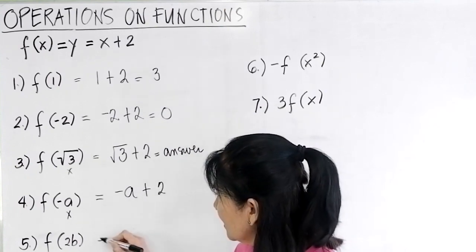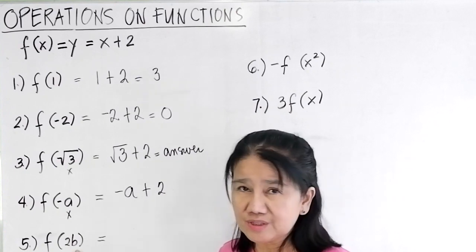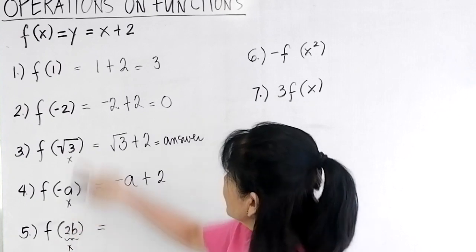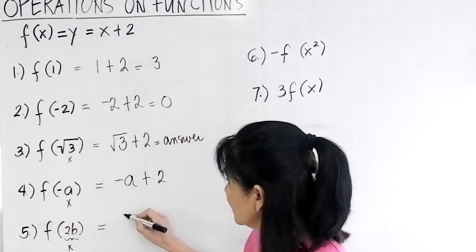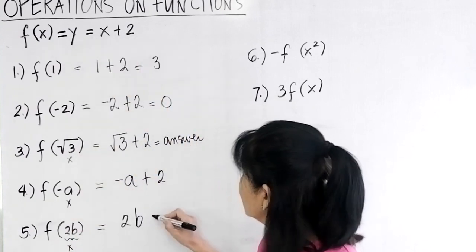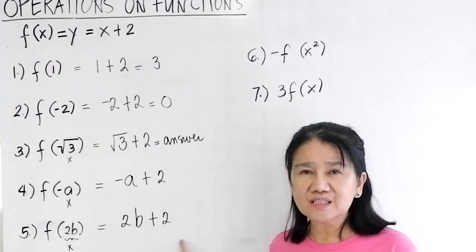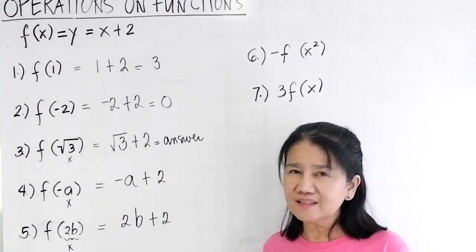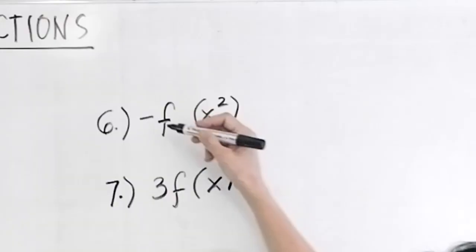For f(2b), x becomes 2b, so the expression is 2b plus 2. Can you simplify this further? No, so this is your final answer.